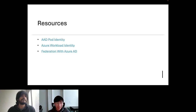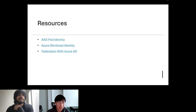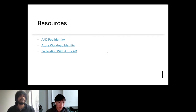That concludes our presentation. Here is a quick list of resources you can check out, including documentation for pod identity and workload identity. There is also a URL for federation with Azure AD, which explains in detail the architecture of federated identity credentials that workload identity is based on.